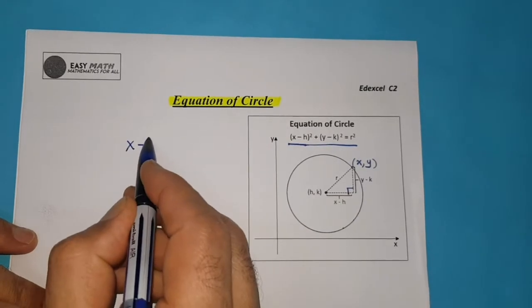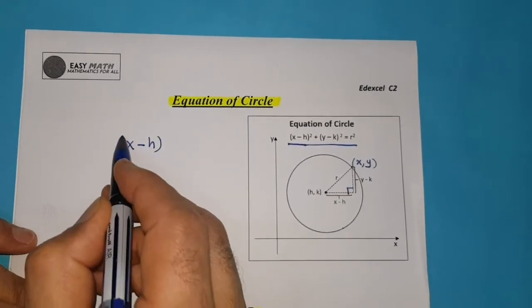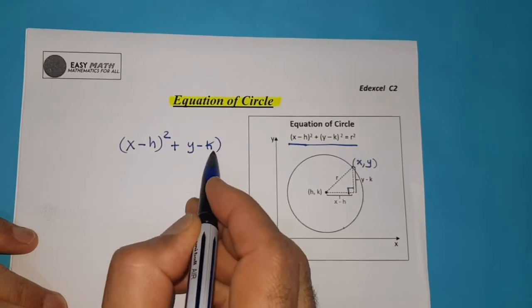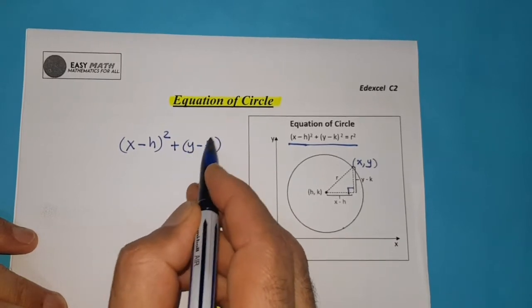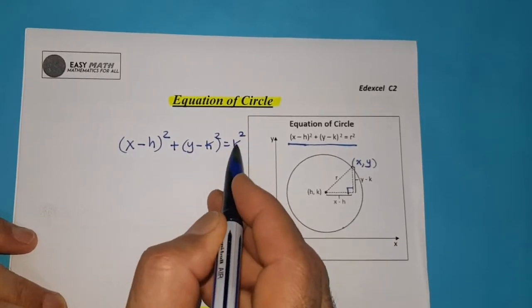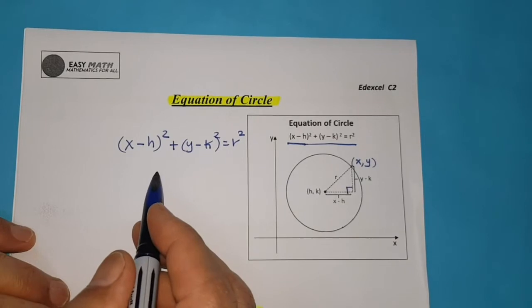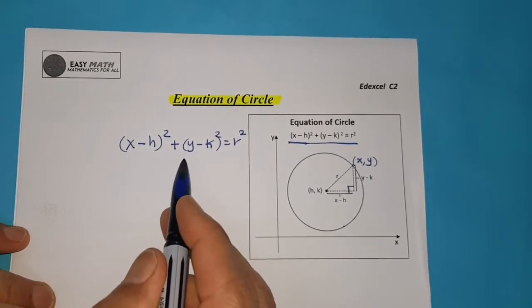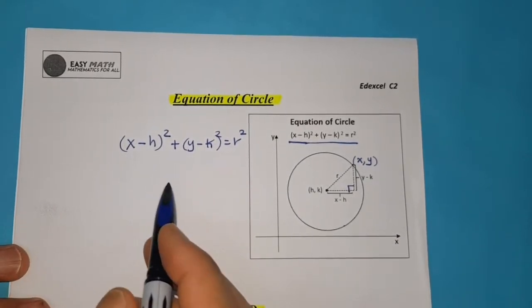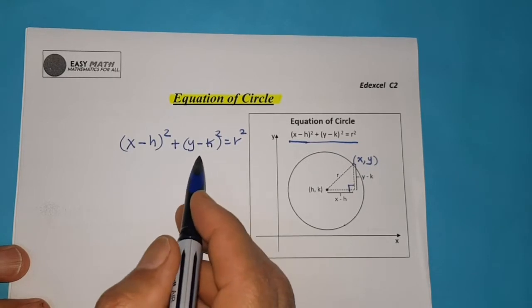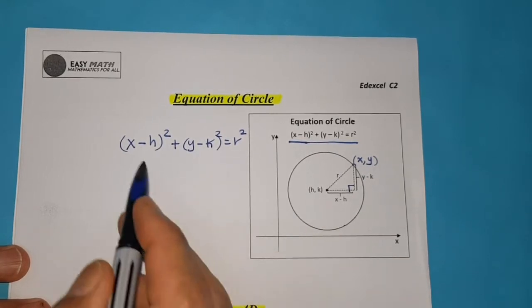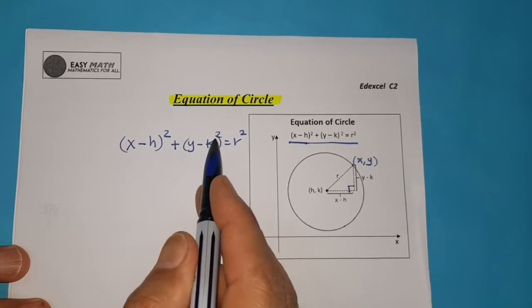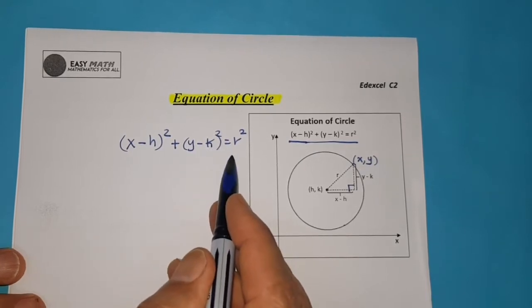So, (x minus h) all squared — this is the first side of the right angle — plus (y minus k) all squared is equal to r squared. This is the formula, or the rule, for a circle. The equation of a circle whose center is h and k is simply (x minus h) all squared plus (y minus k) all squared is equal to r squared.